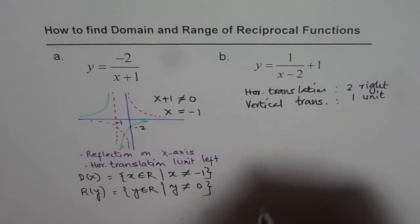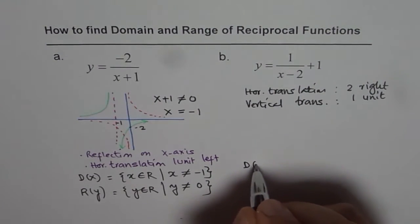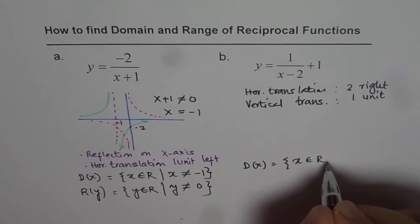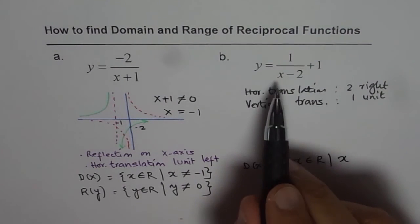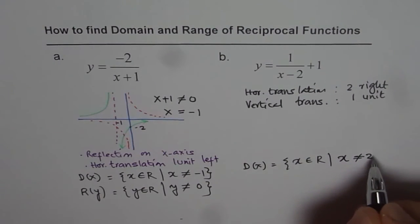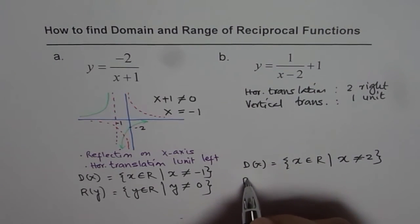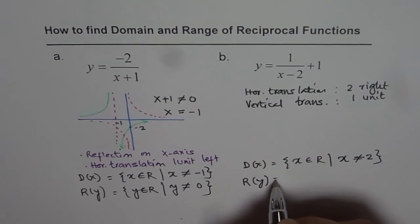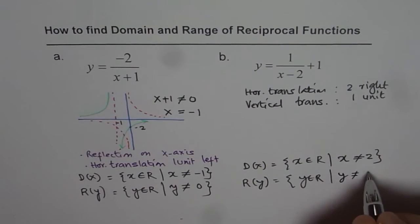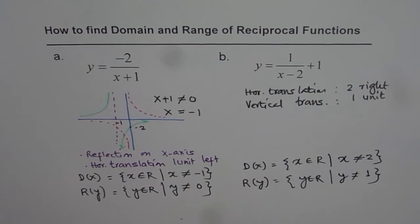So that gives us domain and range. So we can write domain as x belongs to real numbers, where x, earlier it is not equal to 0, now it is not equal to 2. And range, y should not be equal to 1. So y belongs to real numbers where y is not equal to 1. So that is one way of doing it.